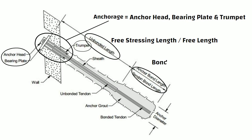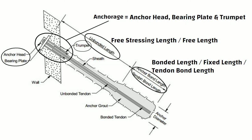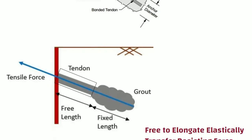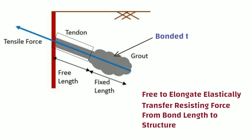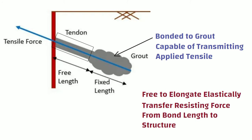The bonded length, also known as fixed length or tendon bond length or anchor bond length, is bonded to the grout and is capable of transmitting the applied tensile load into the ground.